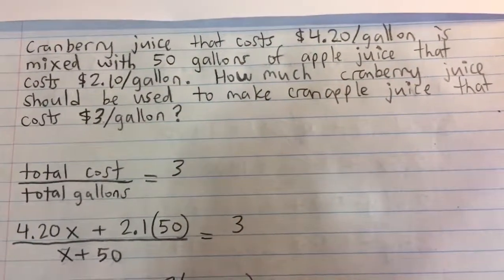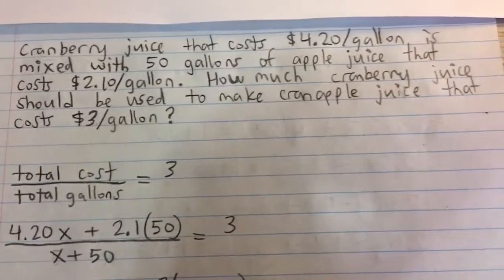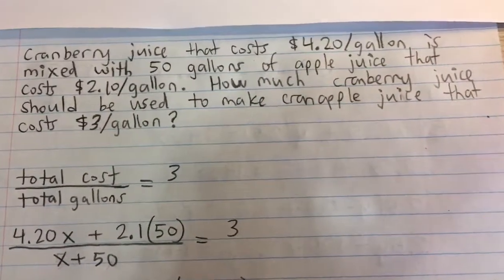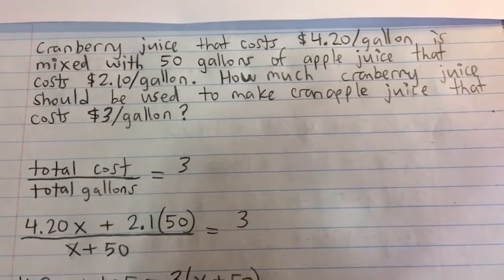Cranberry juice that costs $4.20 per gallon is mixed with 50 gallons of apple juice that costs $2.10 per gallon. How much cranberry juice should we use to make cran apple juice that costs $3 per gallon?